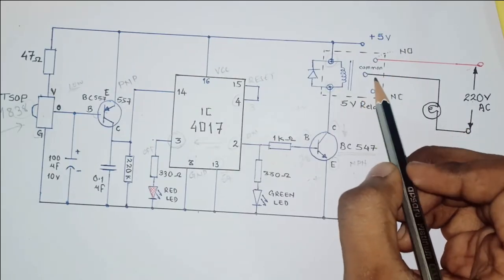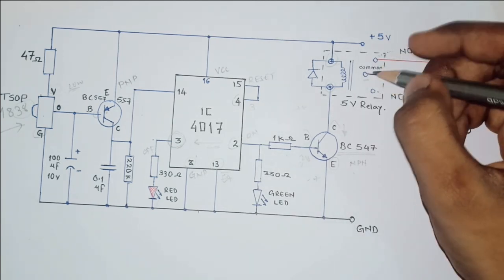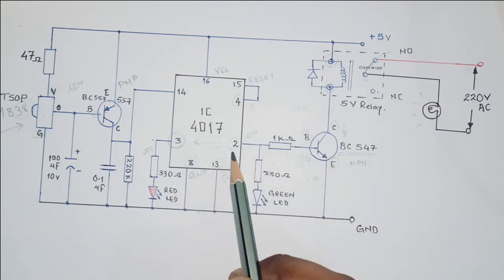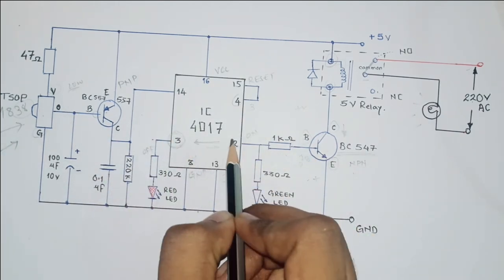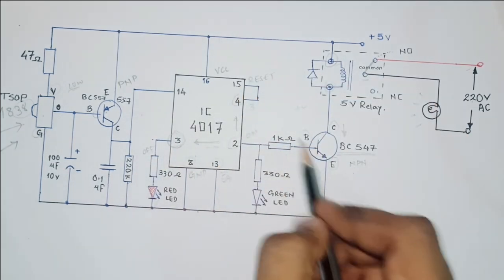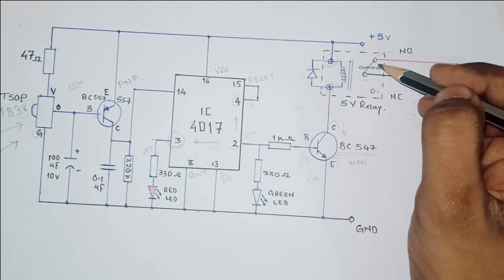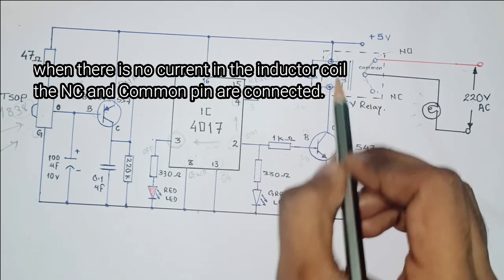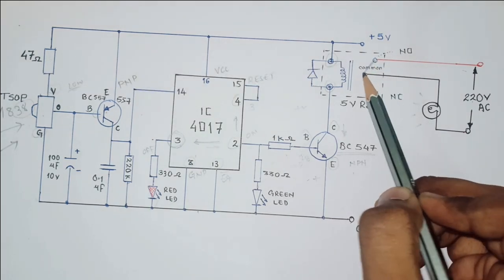Then it is going to switch the relay on and this part will be shorted. It is going to short this part and then this lamp is going to turn on. This is how it works. After that, when you press the button again, this is going to switch to 4. Pin 4 is going to reset the IC and then we are going to get it back. It is going to turn off, so the current will stop flowing through the coil and this will go back to being its initial state when there is no current flowing. It will go back to its normal condition and the lamp will turn off as there is no connection between the common pin and the normally open pin.